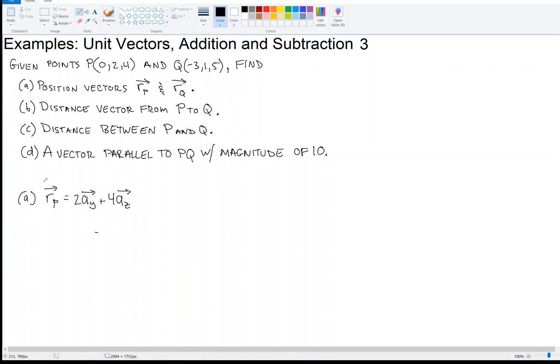Alright, that's our answer for P's position vector. And then Q's position vector, Q is minus 3 in the X direction, so minus 3 times that unit vector there, plus 1 in the Y direction, so plus AY, and then plus 5 in the Z direction, AZ, like that.